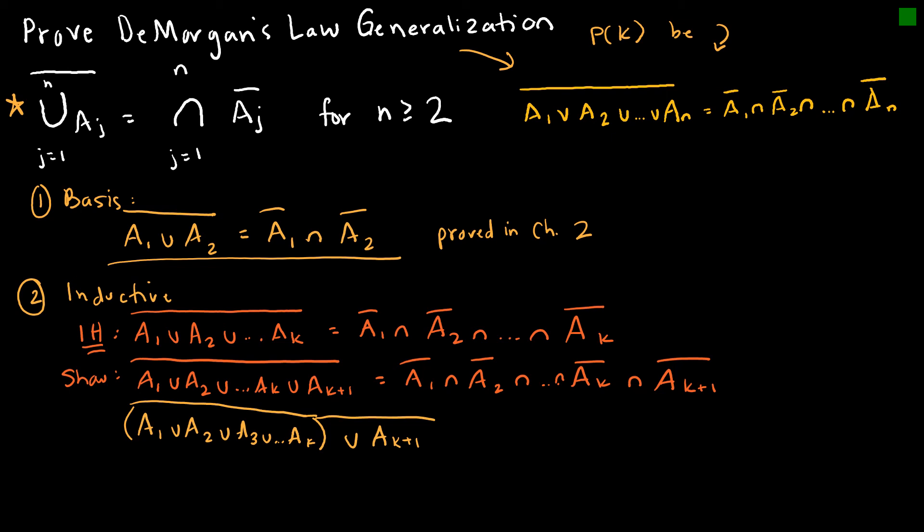Well, the great thing is DeMorgan's law says that if you have the union of the intersection of two sets, then it is actually equal to the intersection of the sets. And so what I have is (A1 union A2 union A3, etc., all the way to A k) complement.